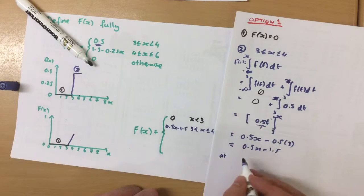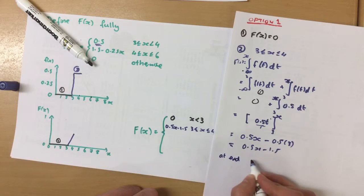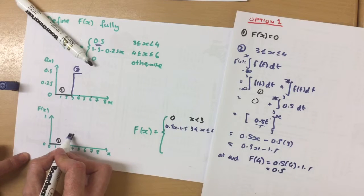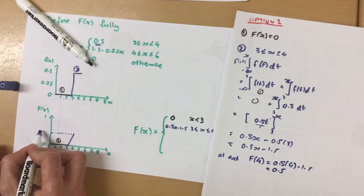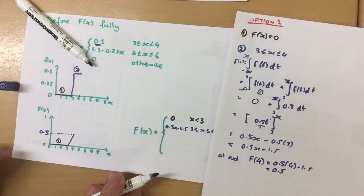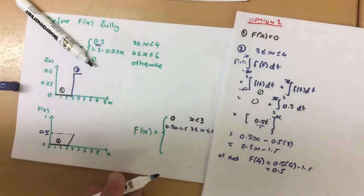So at the end of this is when the cumulative function gets to 4. So we can substitute 4 into here, which is going to give us a value of 0.5. So when we reach this point, we're going to be at 0.5.